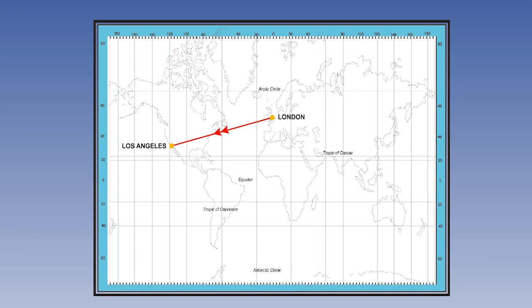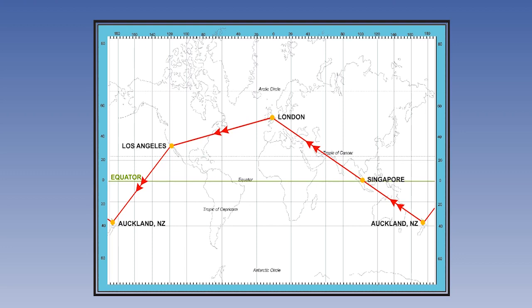Let us look at this route from London to Los Angeles, Los Angeles to Auckland, New Zealand, Auckland to Singapore, and from Singapore back to London again. Note that the route from London to Los Angeles is all in the northern hemisphere. LA to Auckland crosses the equator. Auckland to Singapore is all in the southern hemisphere. And Singapore back to London is all in the northern hemisphere again. This is on a Mercator chart, so the straight lines joining these points are all rum lines. However, always bear in mind that they are not the shortest route — it is a distortion of the chart.